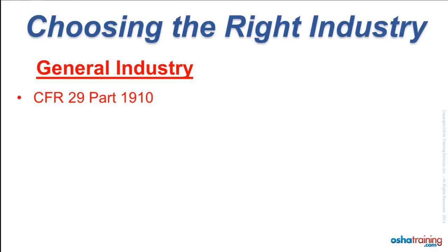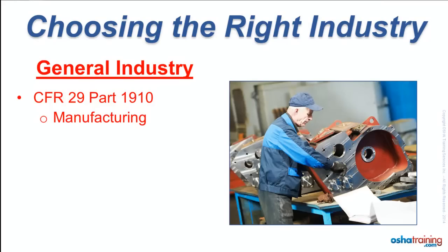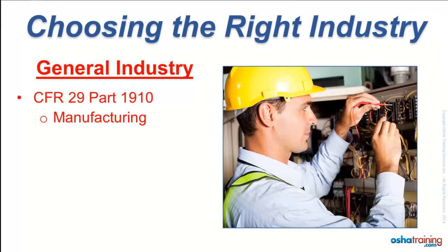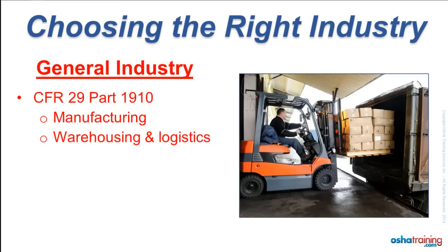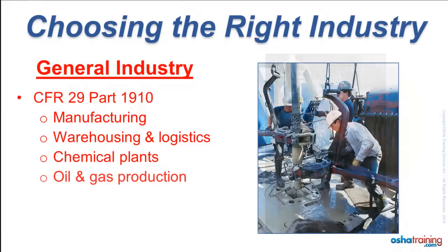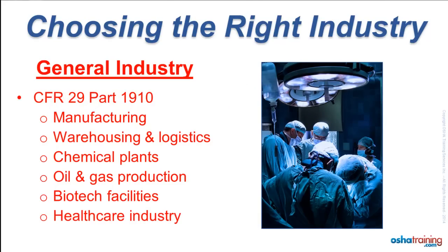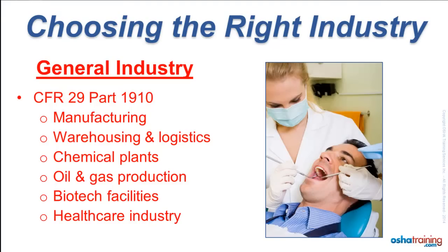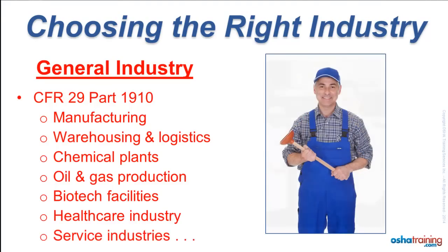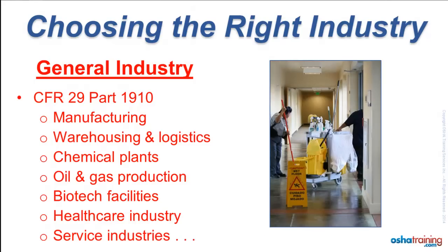The general industry courses cover most workers in the United States, including those employed at most factories. The manufacturing of most industrial and consumer products including food products, and maintenance activities at these operations, would all be covered. So would employees in warehousing and logistics, chemical plants, oil and gas production operations including refineries, biotech facilities, workers in healthcare such as medical care providers and dental offices, and those in service industries such as plumbing, food and hospitality, and janitorial services, to name a few.